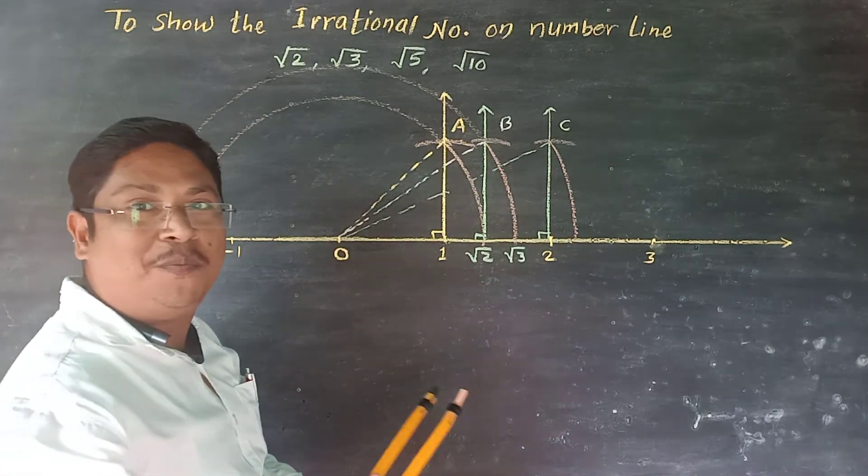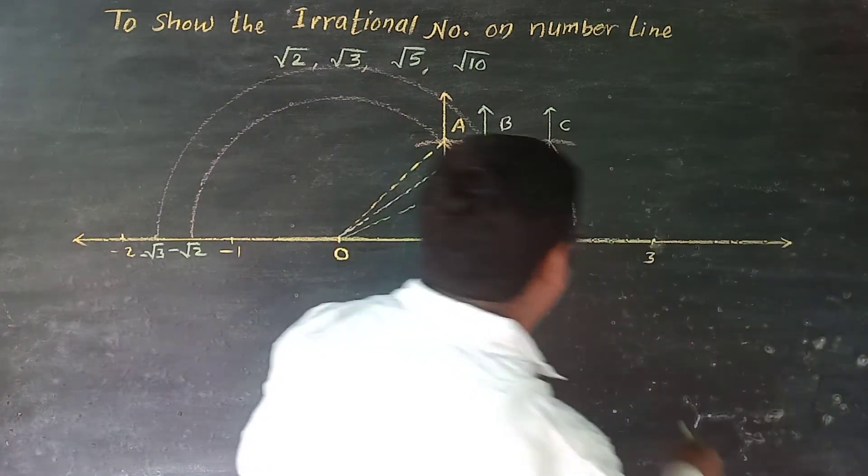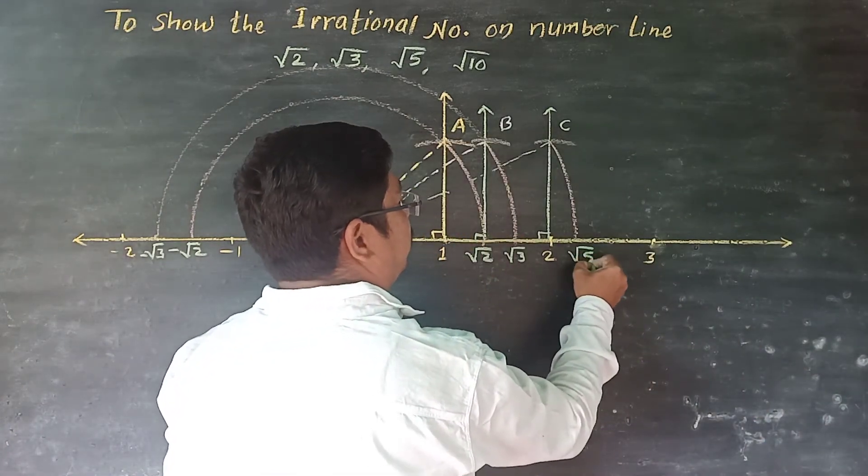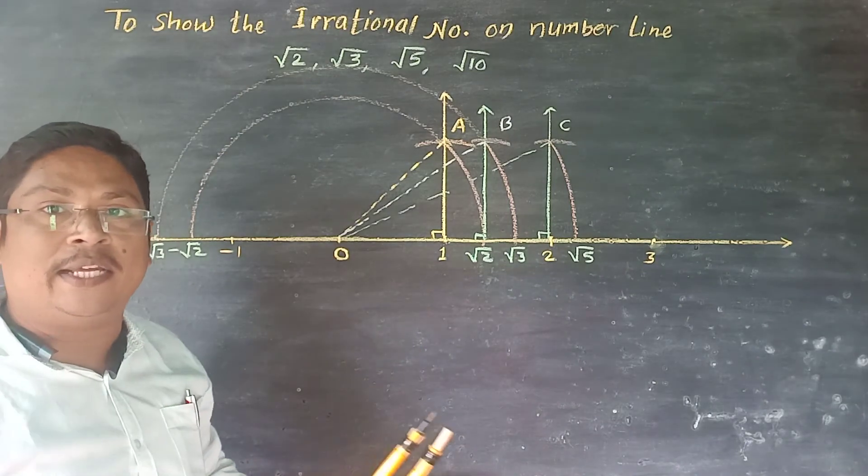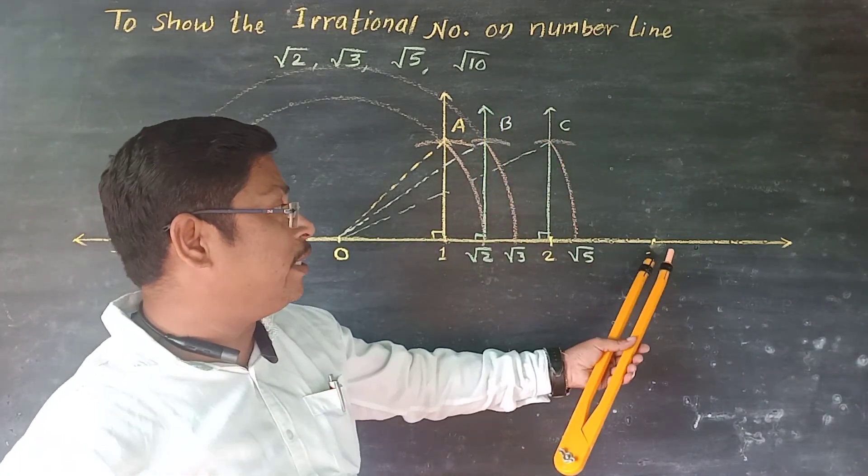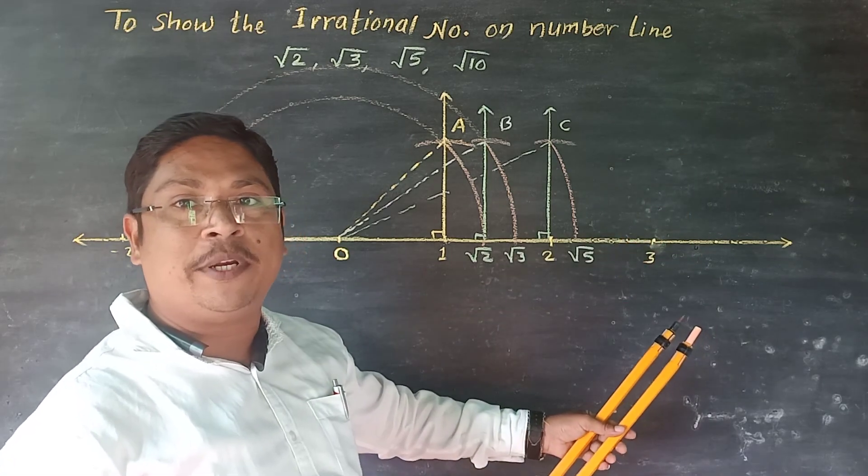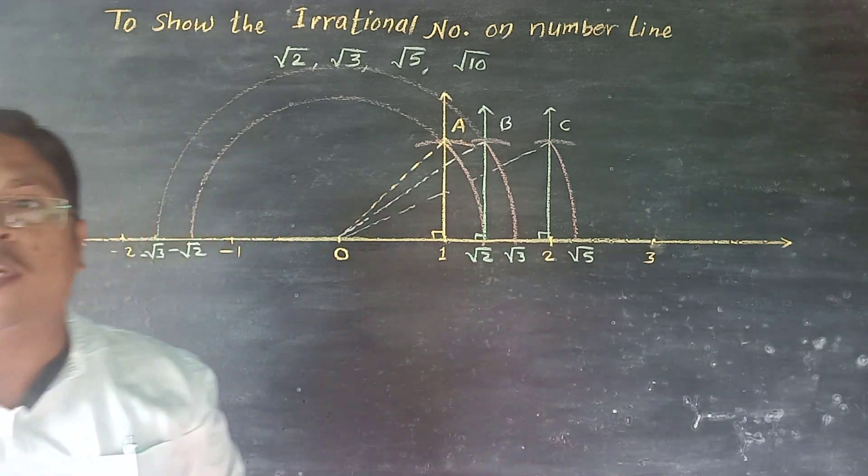Here we get the value of root 5, root 6, root 7, and continuing, root 10. This procedure we repeat and here we get the root 10.